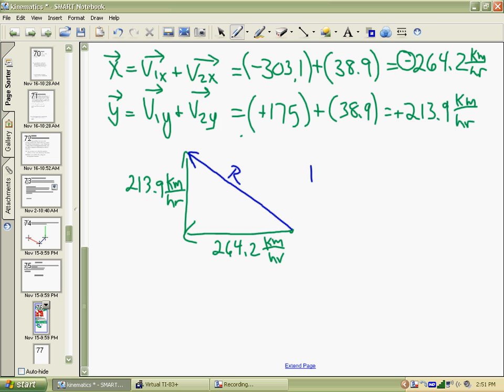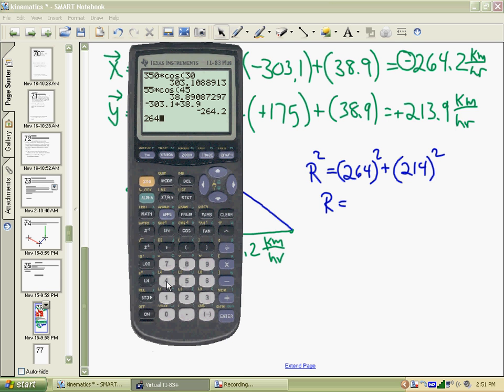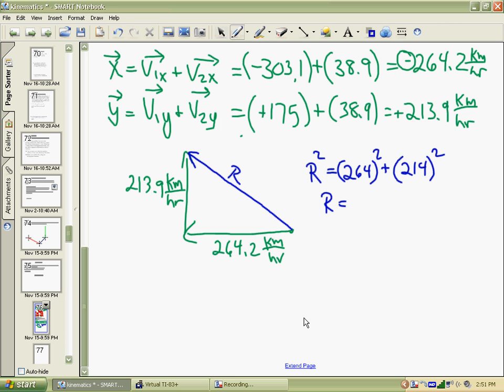How will we calculate that? We're on to Pythagorean theorem where r squared is 264 squared and 214 squared. So we add those up and take the square root. We have 264 squared and 214 squared, and square root of the answer gives us 340. We're rounding off terribly now; it's the process that's important. 340 kilometers per hour is the magnitude of the resultant vector.